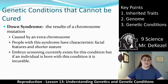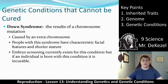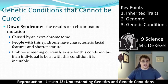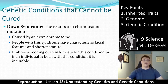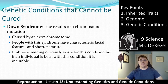Some conditions caused by genetics that cannot be cured include Down syndrome, which is the result of a chromosome mutation — an extra chromosome. People with this syndrome have characteristic facial features and shorter stature. Embryo screening currently exists for this condition, but if an individual is born with it, it is incurable, because all of their cells have one extra chromosome and you can't remove a chromosome from every single cell.